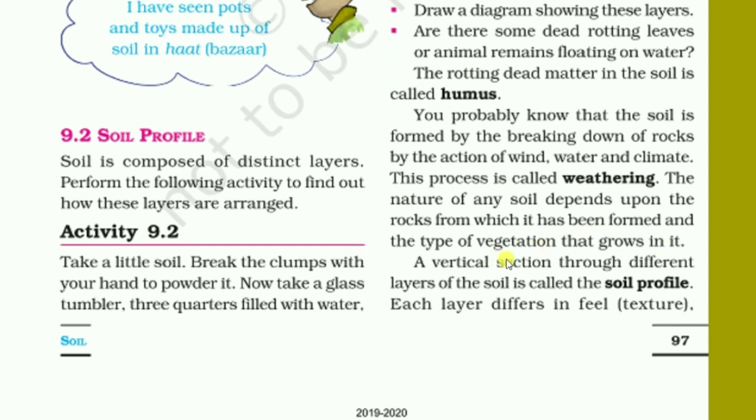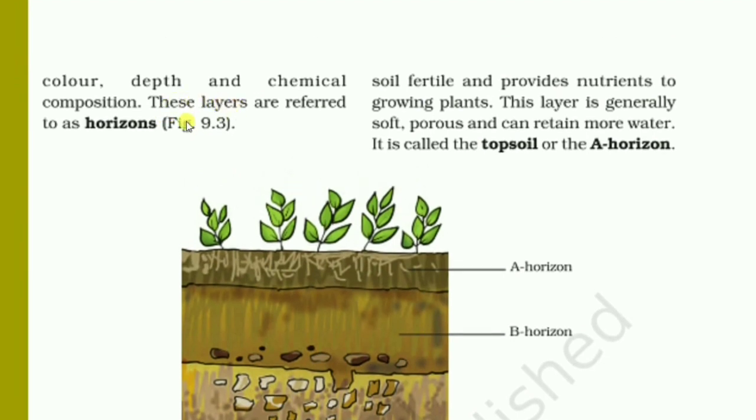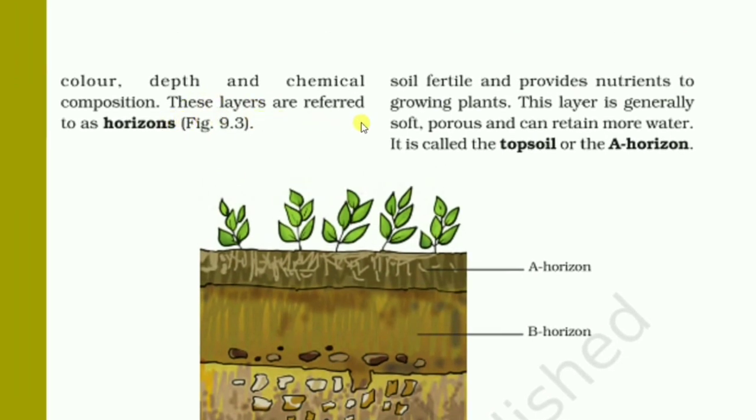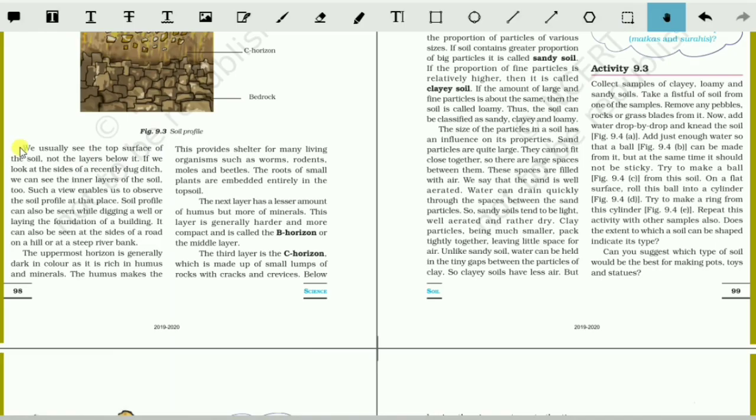Now, a vertical section through different layers of the soil is called soil profile. Each layer differs in field, texture, and of course color, depth, and chemical composition. These layers are referred to as horizons. Focus on the horizons. Now read this portion.